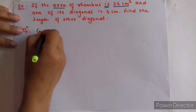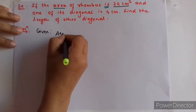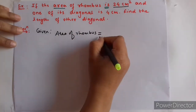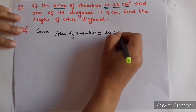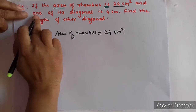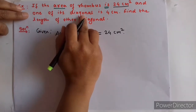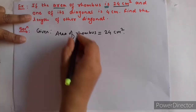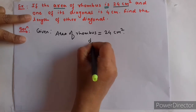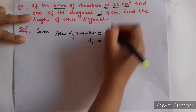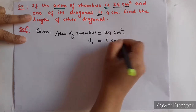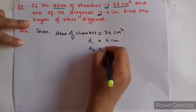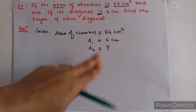Given: area of rhombus = 24 cm². One of its diagonals — we can take it as D1 or D2; we will take D1 — so D1 = 4 cm. Find the length of the other diagonal, D2. Since D2 is unknown, we mark it with a question mark — that is what we need to find.